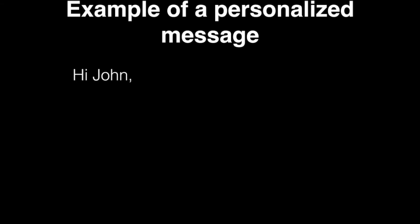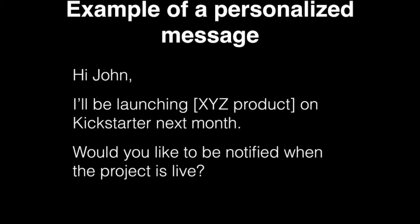Once you have grouped your contacts, you need to prepare a personalized message. For your closest friends it can be unique, and for others you can use the same template — just insert the recipient's name. A message can sound like this: 'Hi John, I will be launching XYZ product on Kickstarter next month. Would you like to be notified when the project is live?' When you have the message ready, it's time to reach out to your contacts and mark those who agreed to be notified in a spreadsheet.